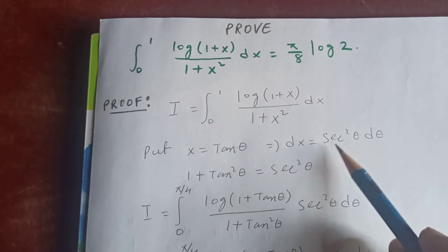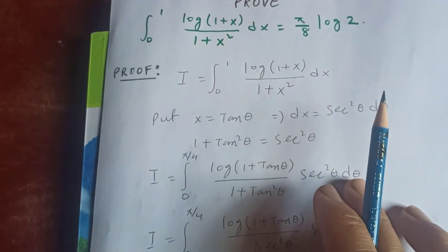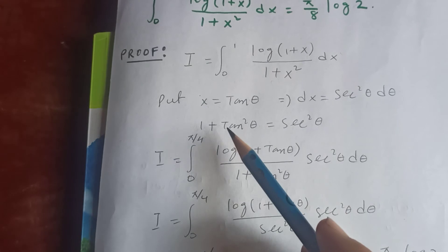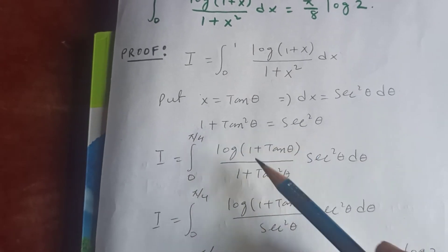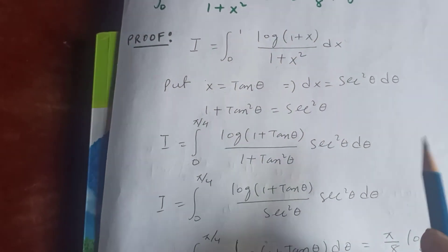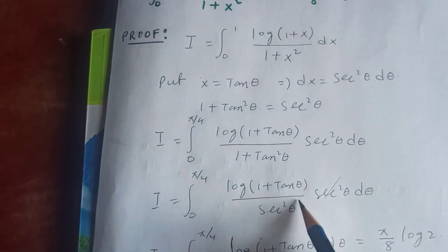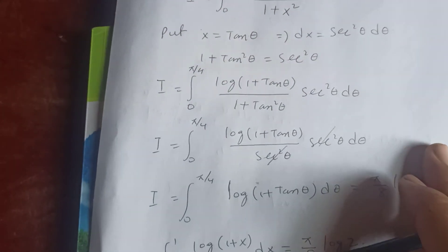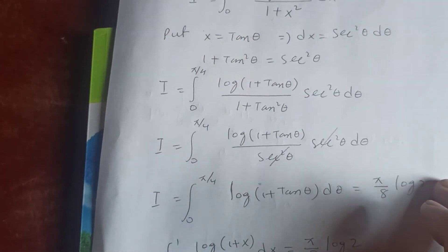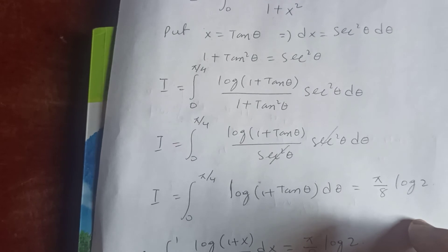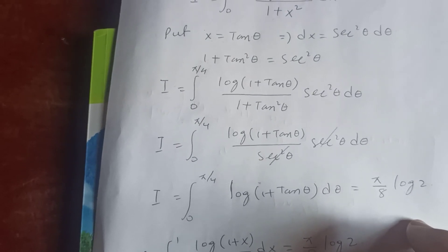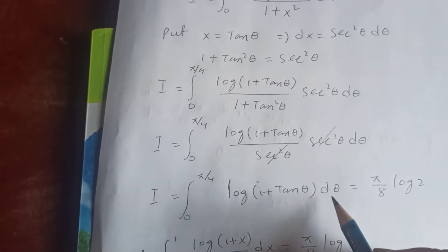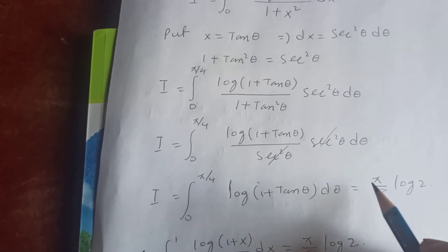We know that 1 + tan² θ equals sec² θ, so the sec² θ terms cancel. We are left with the integral from zero to pi/4 of log(1 + tan θ) dθ. This is a known result which I have already proved.